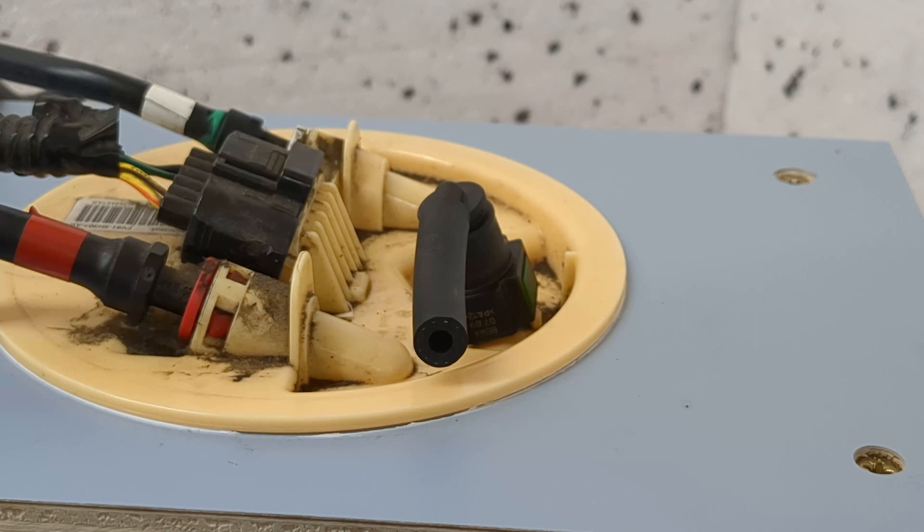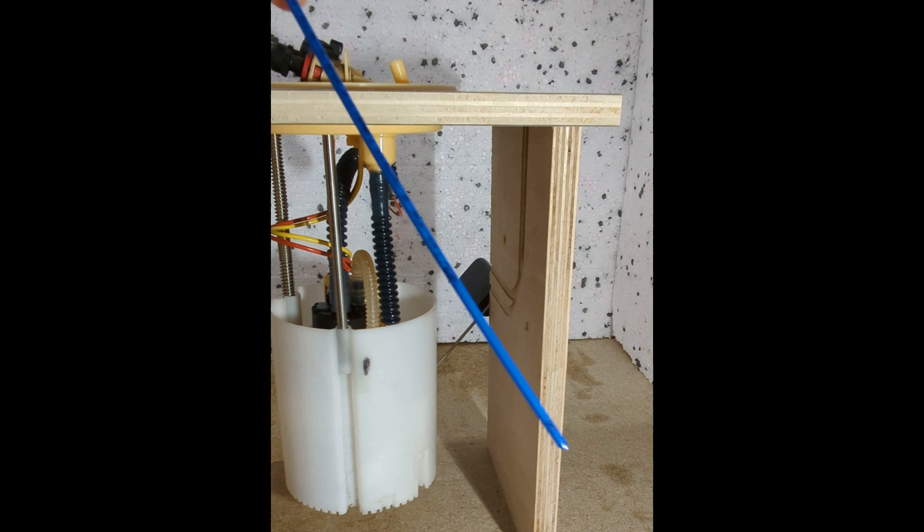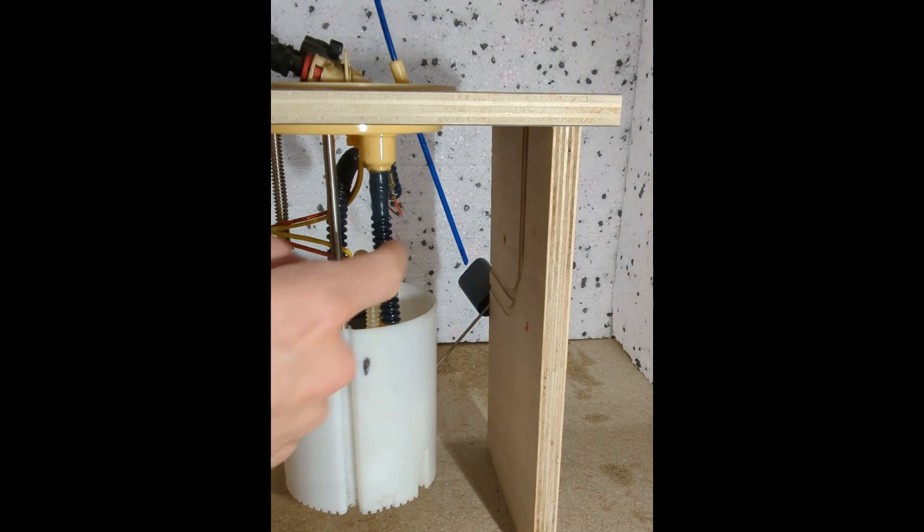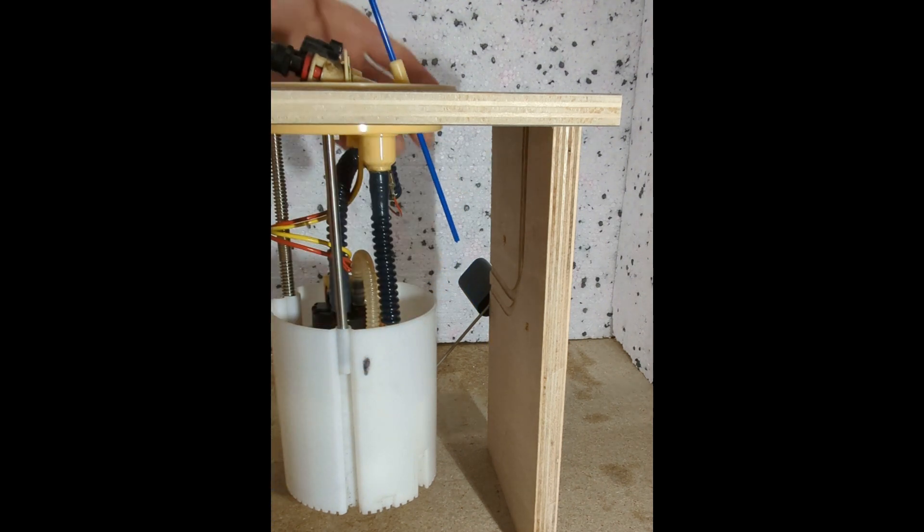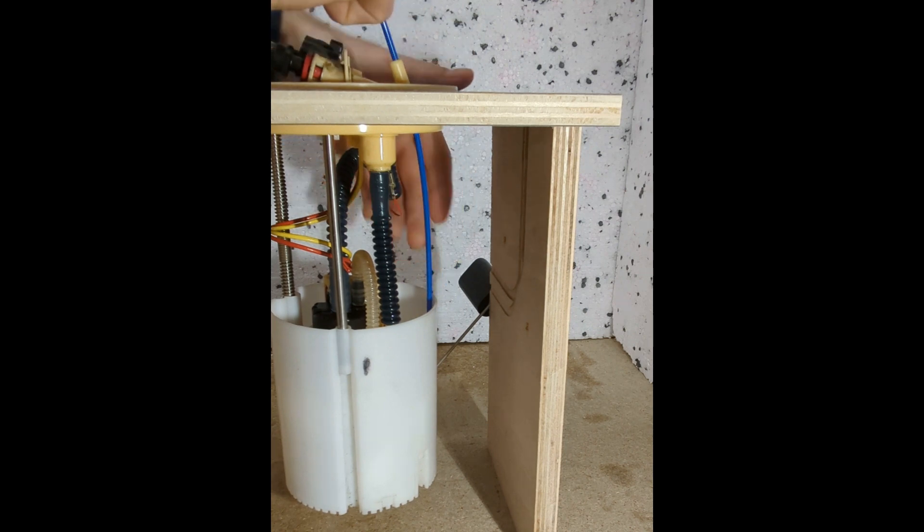It's important to make sure the fuel tube doesn't have too much of a bend or a kink on it as it goes in. It's already at an angle so it should miss the actual sender unit. If it did have a bend, you could get an issue of it hitting the pump.